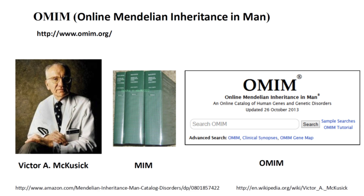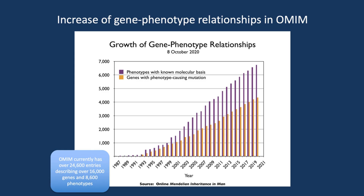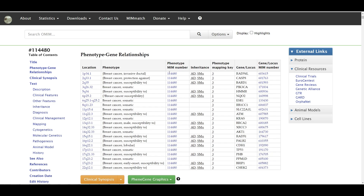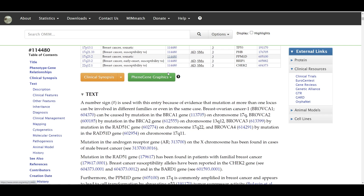The purple bars in this figure show the number of genetic disorders with known molecular basis; the orange bars show the number of mapped disorders caused by genetic mutations. OMIM now includes not only single-gene Mendelian disorders but also complex diseases with susceptibility genes and some somatic cell genetic diseases.